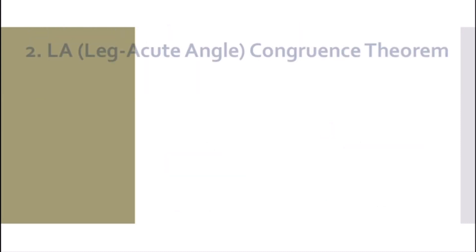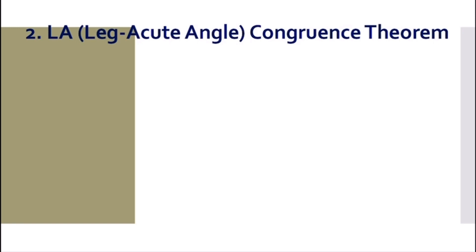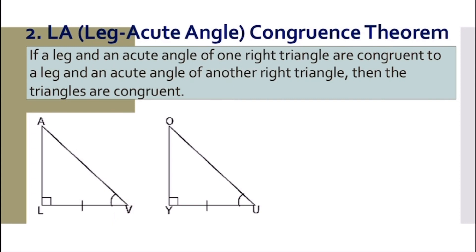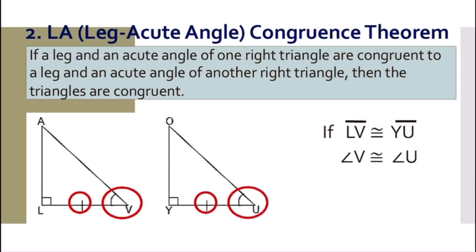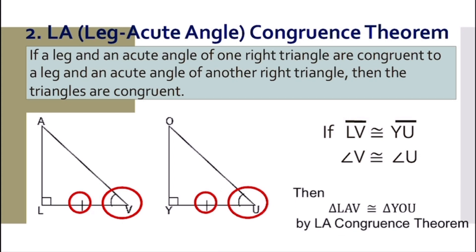For number two, we have the LA congruence theorem, or leg and acute angle. If a leg and an acute angle of one right triangle are congruent to a leg and an acute angle of another right triangle, then the triangles are congruent. For example, if line segment LV is congruent to line segment YU and angle V is congruent to angle U, then triangle LAV is congruent to triangle YOU by the LA congruence theorem.